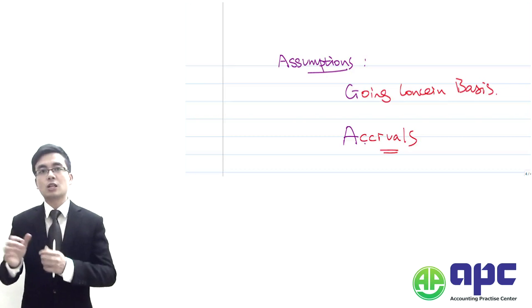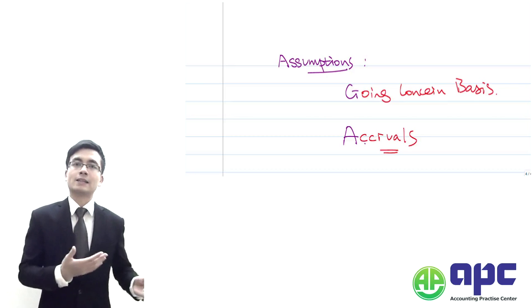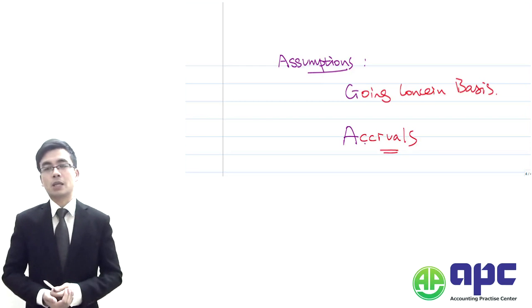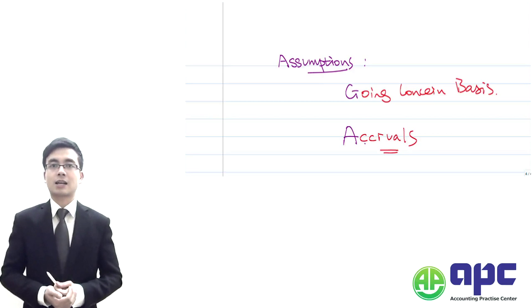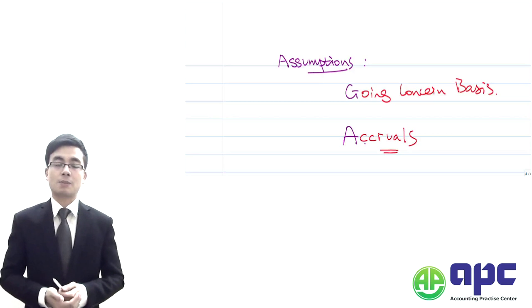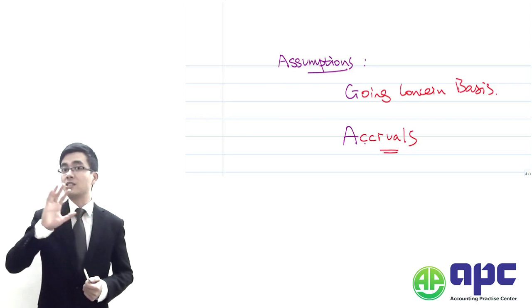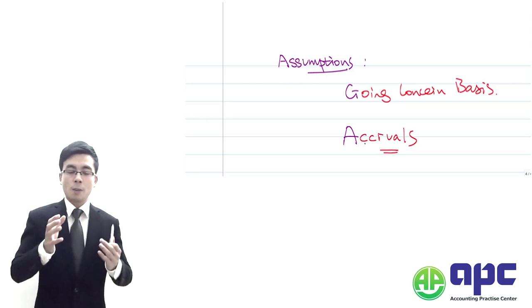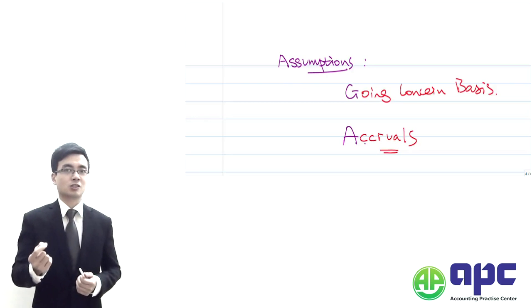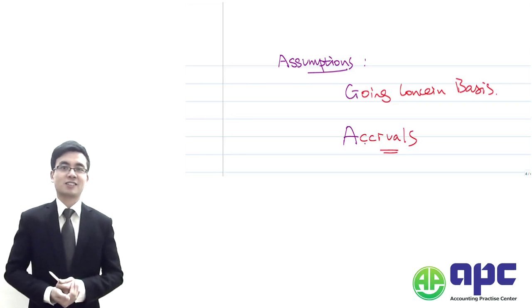This is contradictory to the cash basis, which applies to the Statement of Cash Flows. Under the cash basis, you only recognise cash when it is received into your bank account. But under your Statement of Financial Position, even if you've received no cash yet, if you have the right to receive that cash from the customer at some point in the future, you can recognise that transaction right now.